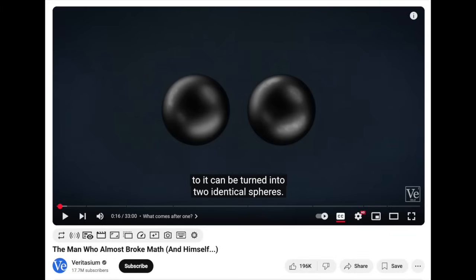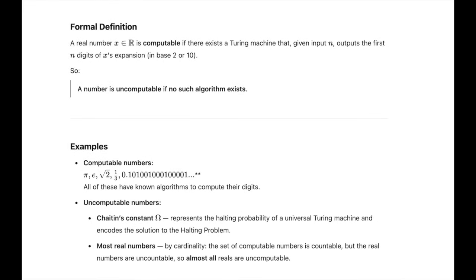But the issue is not with the axiom of choice itself, but with the other axioms that allow the creation of uncomputable numbers. An uncomputable number is a number for which no method of computing all of its digits exist. Now, in this video, I will be sticking to numbers between 0 and 1, so when I'm referring to numbers like pi and e, it will just be referring to the decimal portion of those numbers so that they are between 0 and 1.